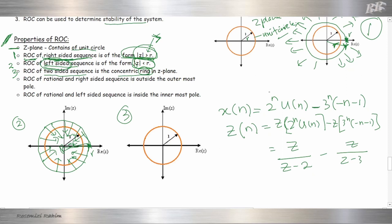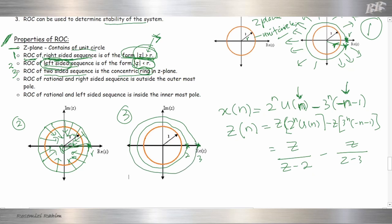So in this case we have a combination of a right-sided sequence and a left-sided sequence. Negative N means left-sided; positive N means right-sided. Our poles are R equal to 2 and R equal to 3. We draw two circles — one with radius 2 and one with radius 3, based on the two poles.